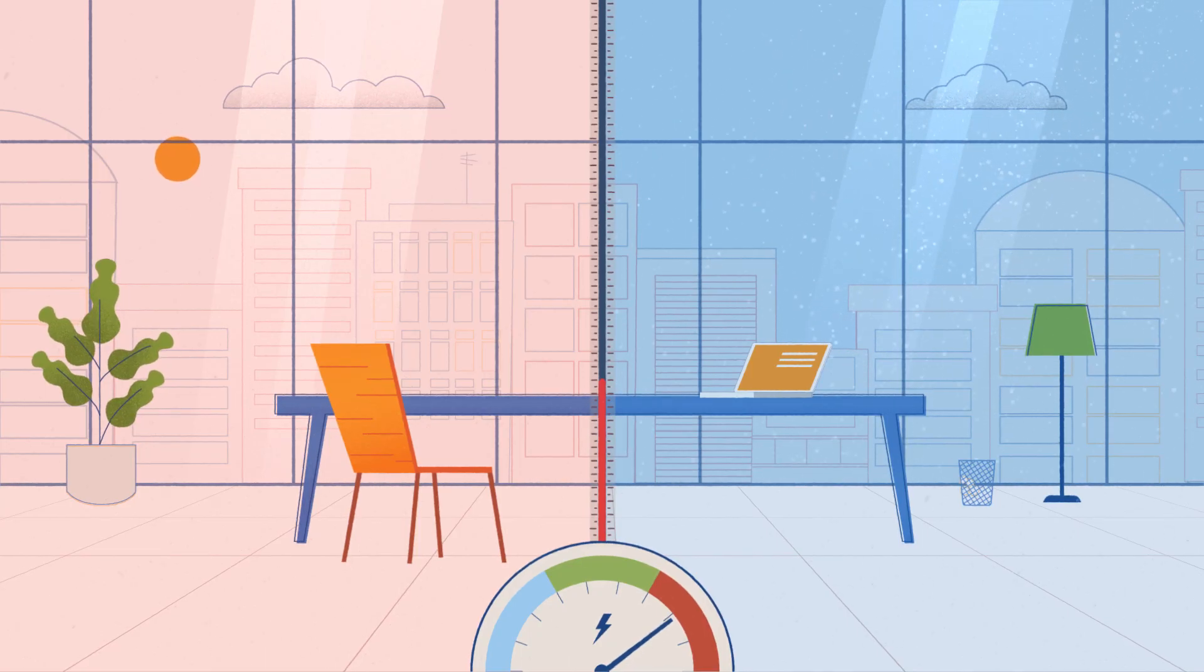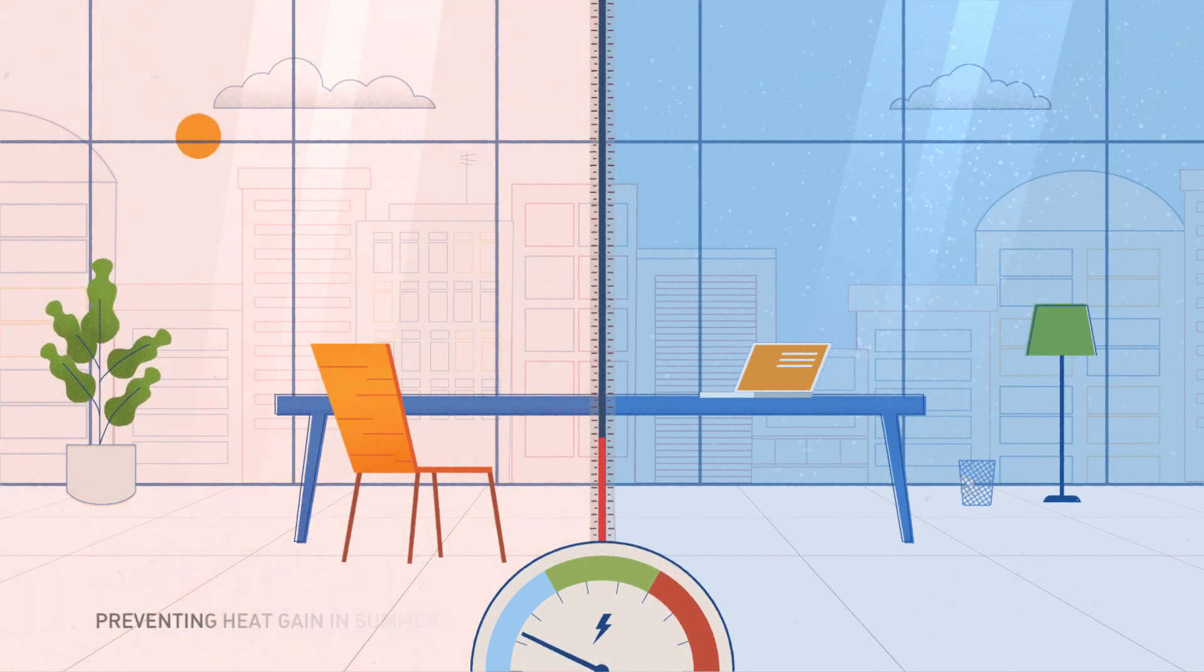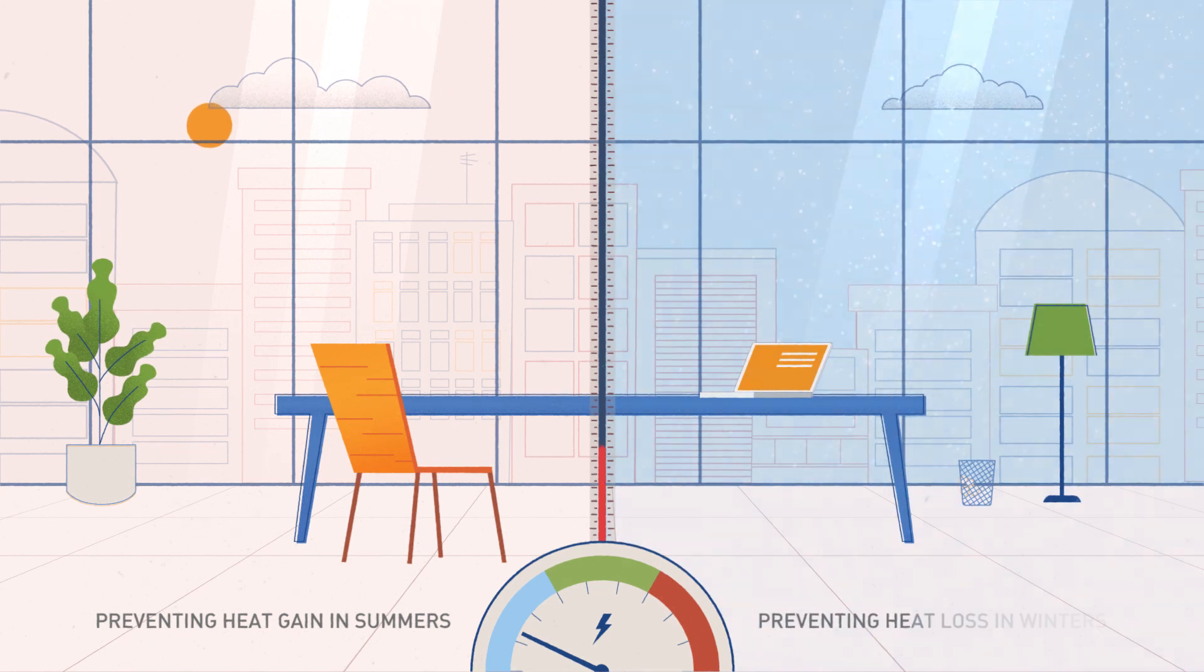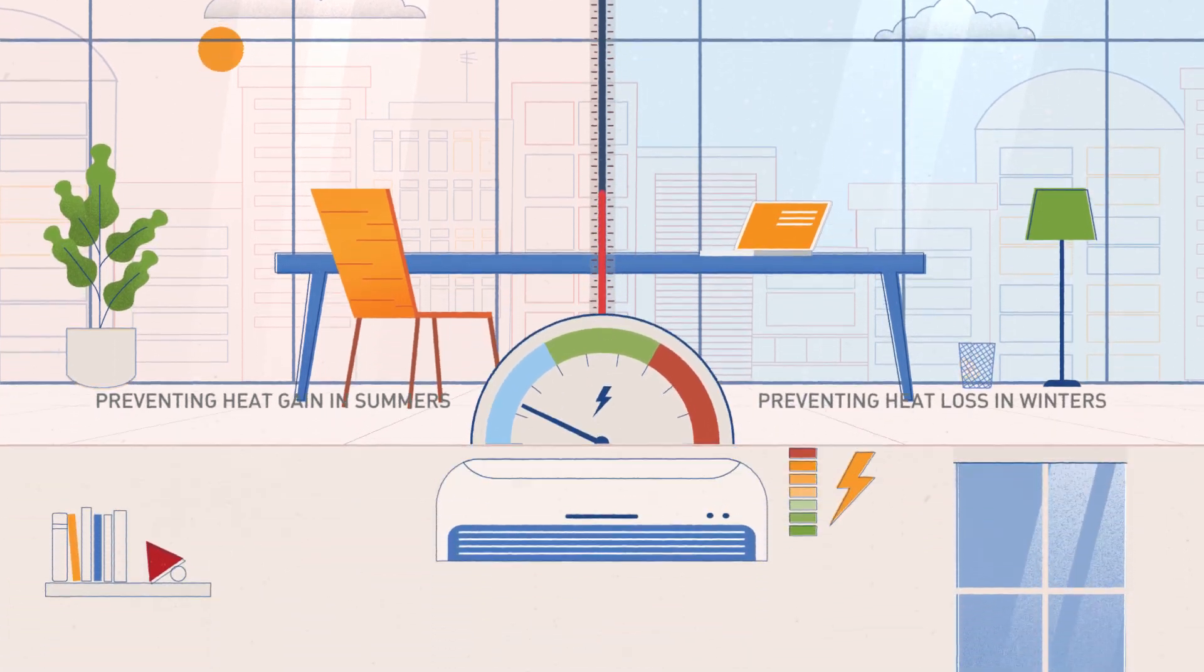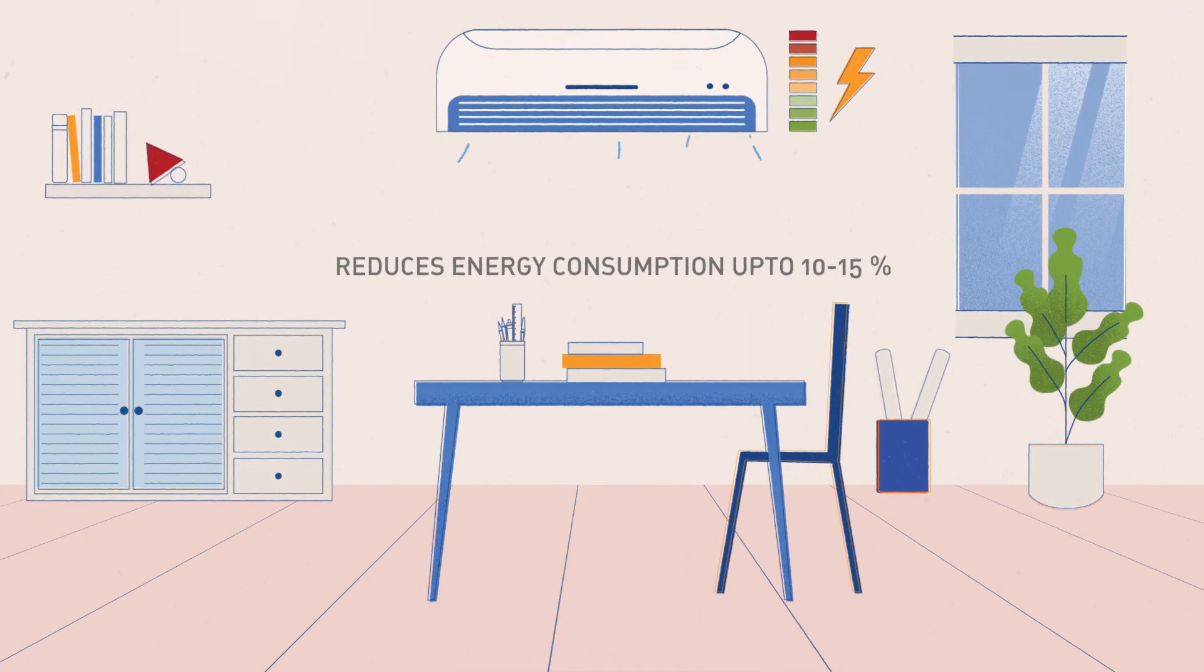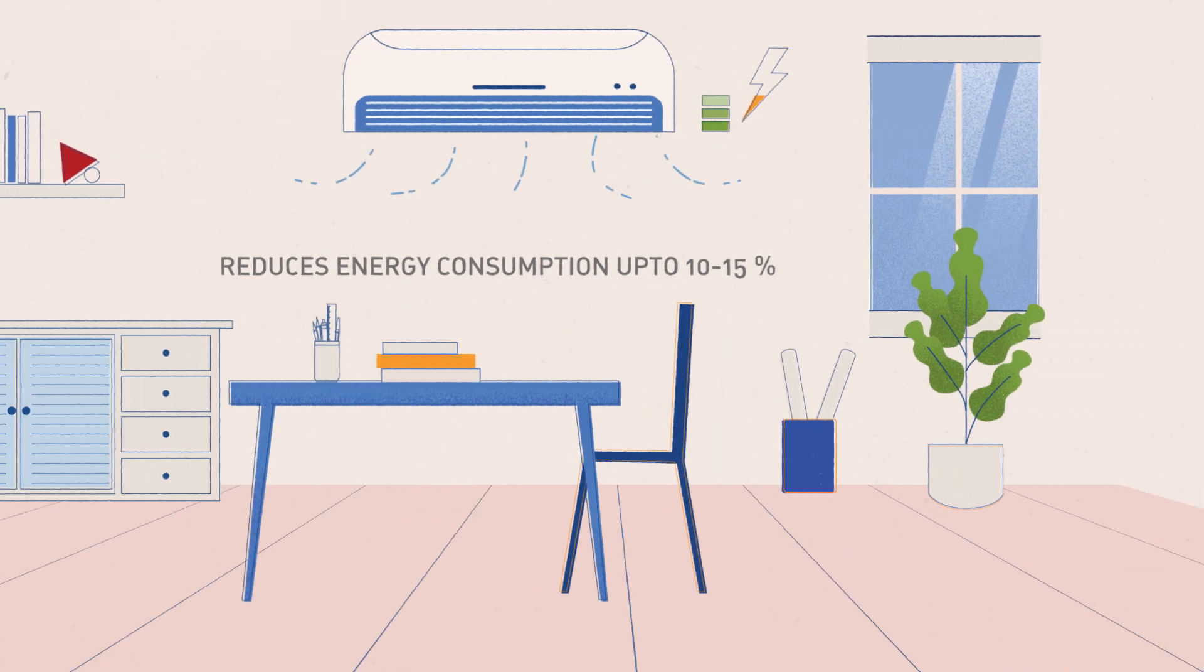A high-performance glass works to reduce energy consumption, preventing heat gain in summers and heat loss in winters. It reduces energy consumption up to 10% to 15%, making it an economically viable option, resulting in lower electricity bills.